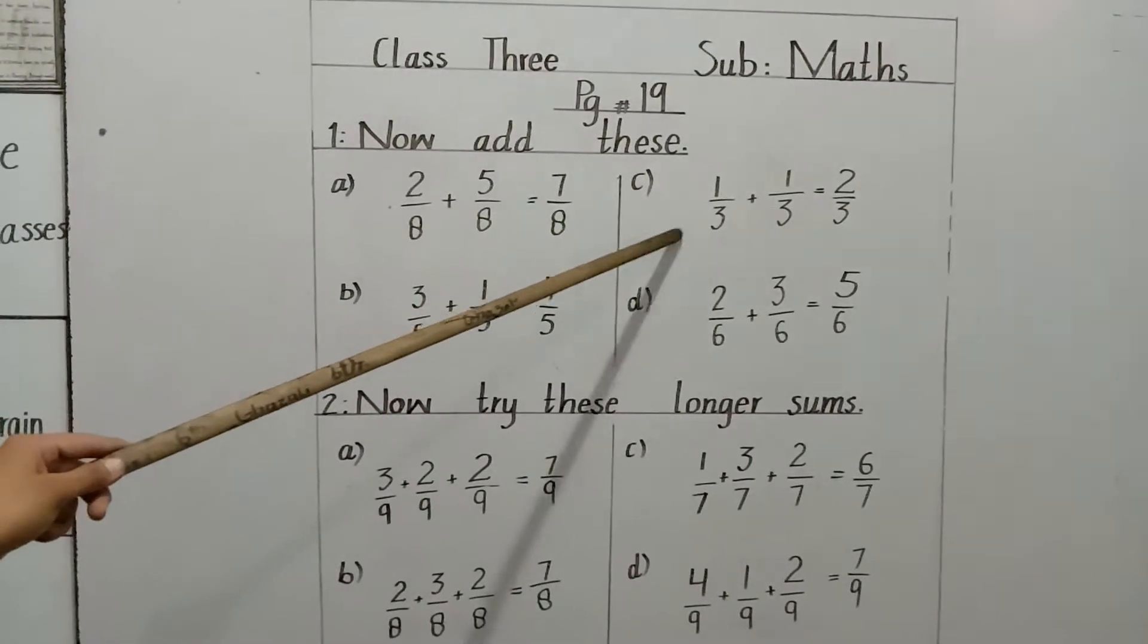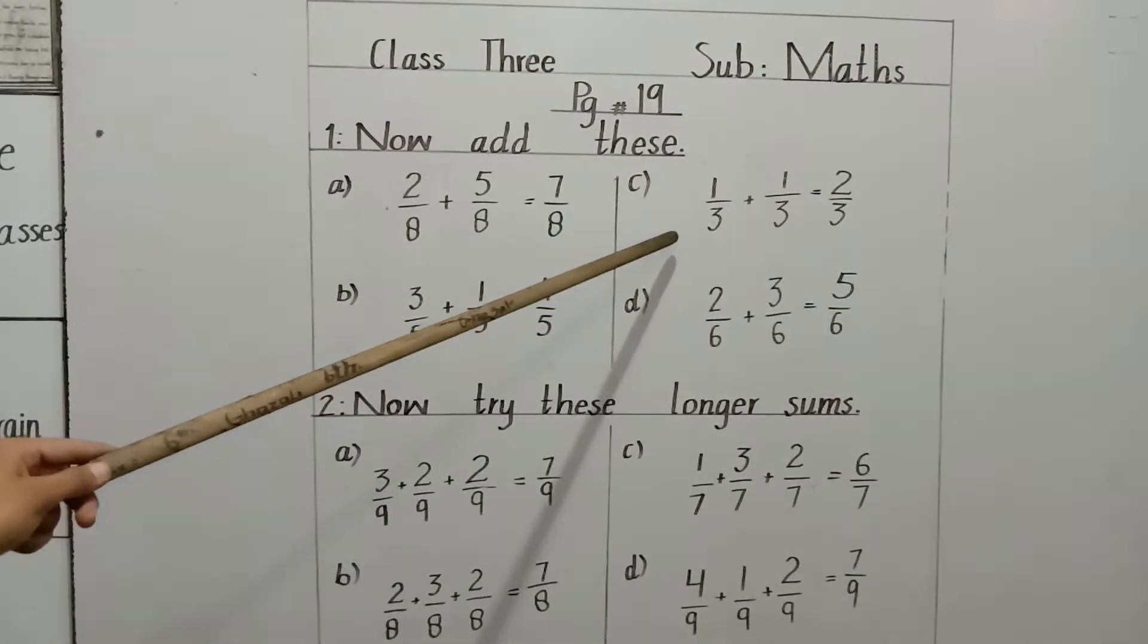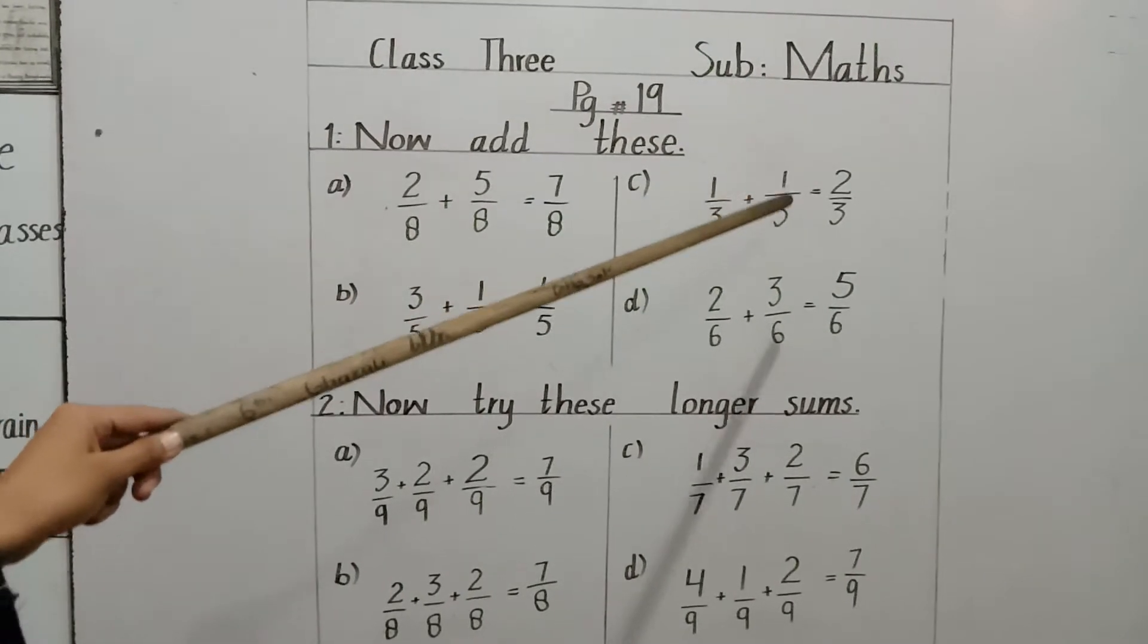Here also, 1 by 3 plus 1 by 3. The denominators are same and we will add numerators. 1 plus 1 equals 2. 2 by 3.